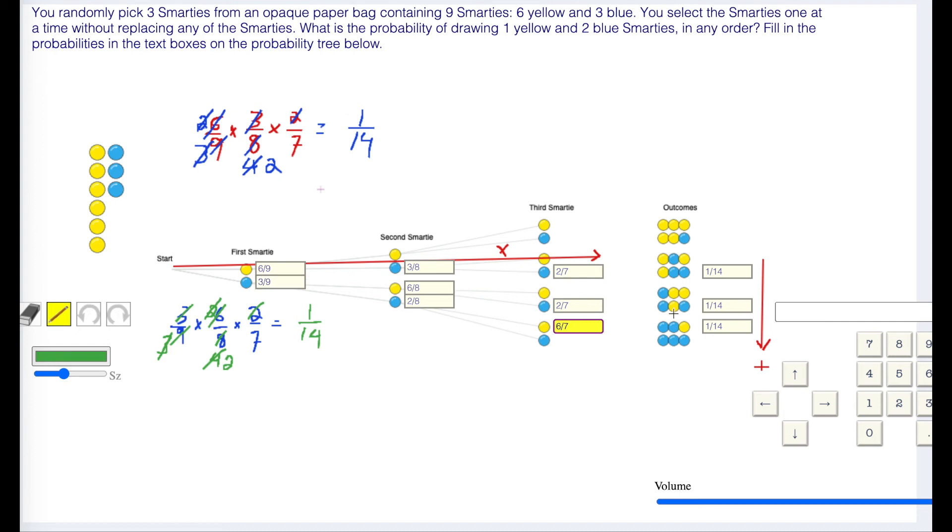When we multiply that we're gonna get 1/14 as well. We have 3/9 for our first fraction times 2/8 for our second fraction times 6/7 for our third fraction.